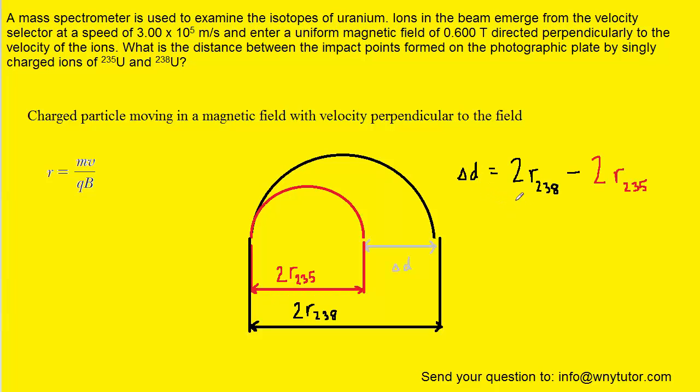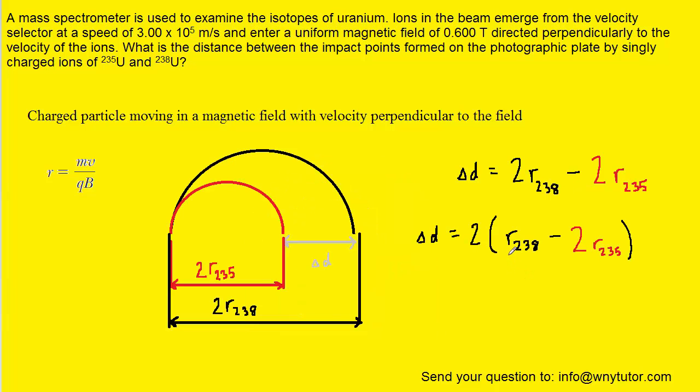So, we've set up that calculation over here, and we'll notice that there is a factor of two common to both terms, so we can actually factor it out. And then, for the radius of the particle whose mass is 238, we can substitute in this expression right here, and then also for the particle whose mass is 235.